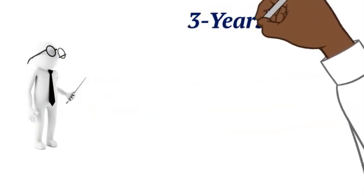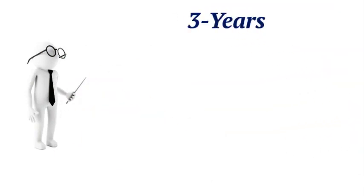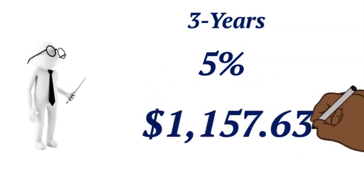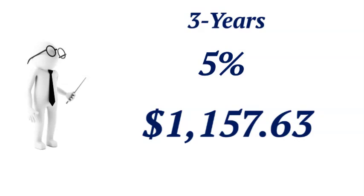By the end of the third year, you'd have earned 5% on your principal and interest, and your account would now be worth $1,157.63. That's $7.63 more than you would have had if you had only earned simple interest.